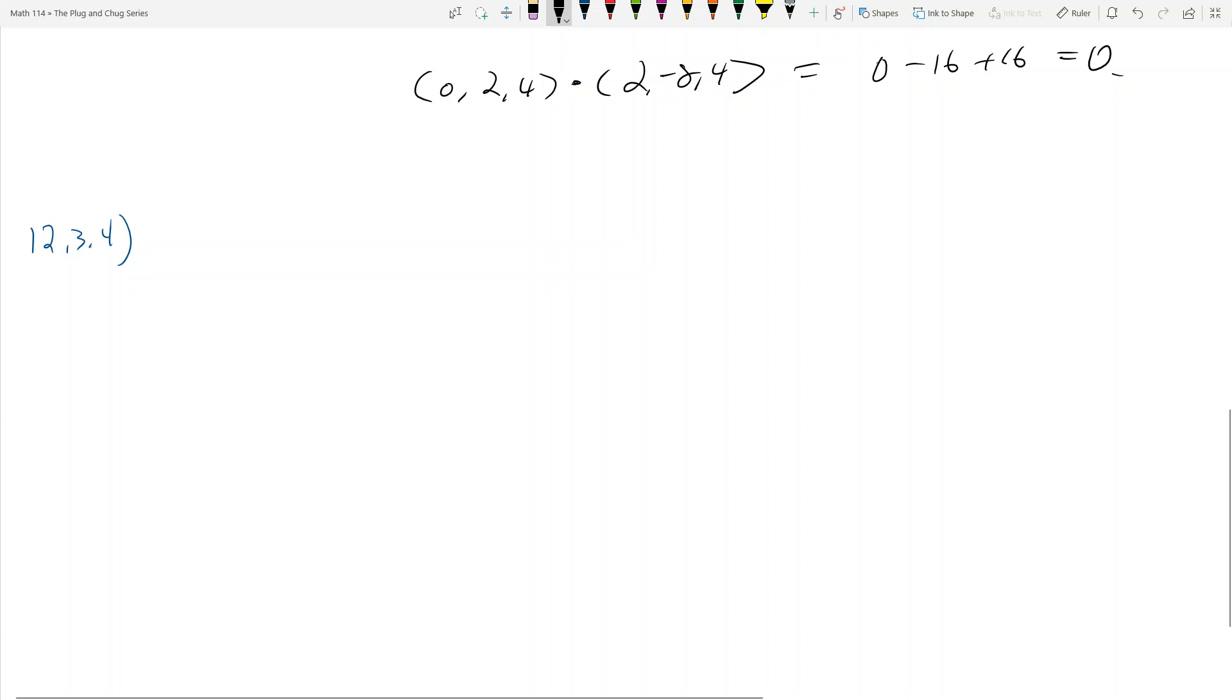And the problem we're going to look at is 12.3.4. And what does 12.3.4 ask? Well, it gives you two vectors.